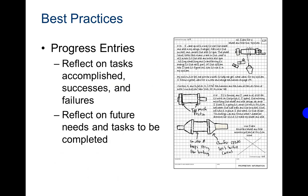Progress entries reflect on tasks accomplished, successes and failures, and reflect on future needs and tasks to be completed. So every day when you write in your engineering notebook, you're going to want to write down what you did that day. Sketch it, take a picture of what you did that day, maybe how far you went. Notice it is not just words, one sentence. They explain it, they have a picture drawn or you can use a camera, take a picture, print that picture and paste it in there. You're going to want to give some detail of what you did, your successes, your failures, and then reflect on what needs to be done the next day.